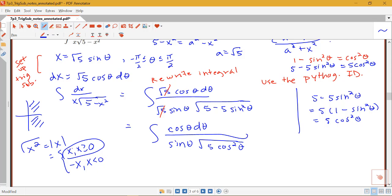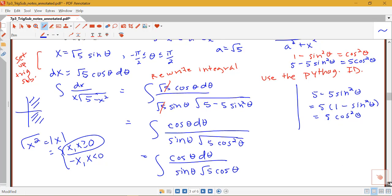Because cosine theta itself would always be positive. So notice that I have cosine theta d theta over sine theta root 5 cosine theta. So now we're looking to do some simplifying here. So what else can we cancel here?